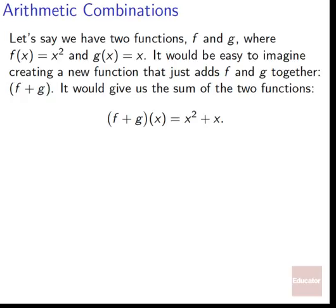Let's say we've got two functions, f and g, where f of x equals x squared and g of x equals x — nice basic functions. It's easy to imagine creating a new function that just adds f and g together. We'd call it f plus g. It would give us the sum of the two functions. The new function, f plus g of x, would be equal to x squared plus x. We're just adding the two functions together using a basic arithmetic operation.